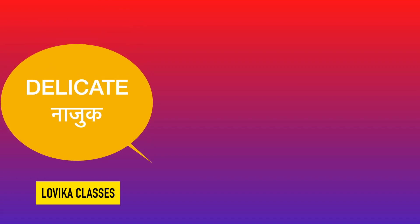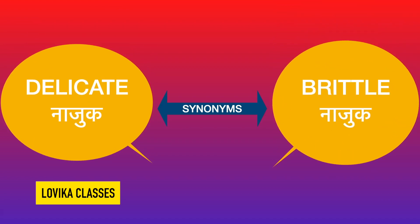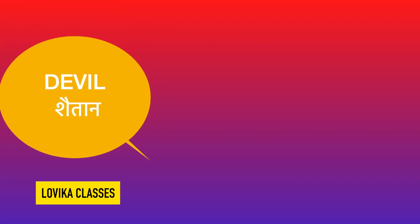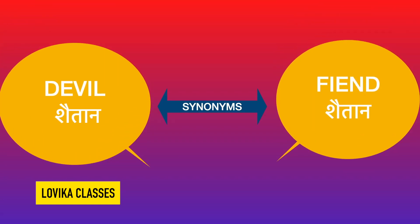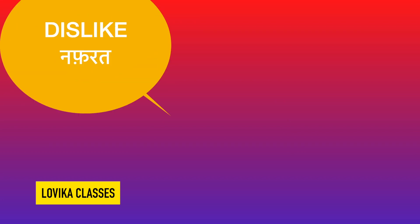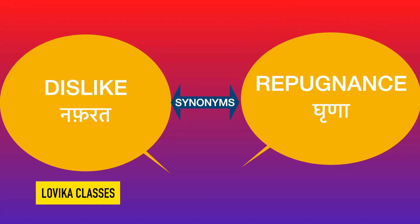Delicate means nazuk — its synonym is brittle, also meaning nazuk. Devil means shaitan — its synonym is fiend. Dislike means grina — its synonym is repugnance. Kisi se grina karna, kisi ko nafarat karna — both are synonyms.